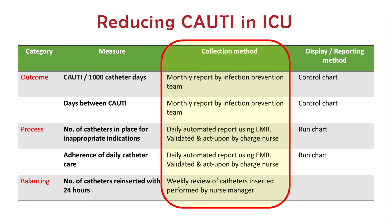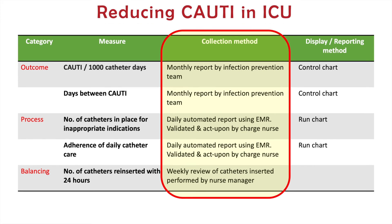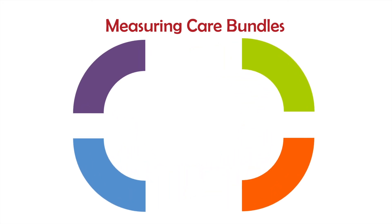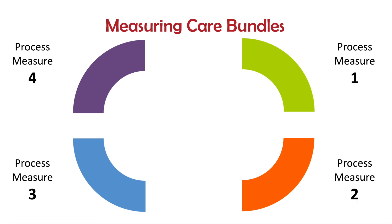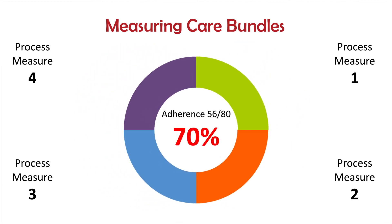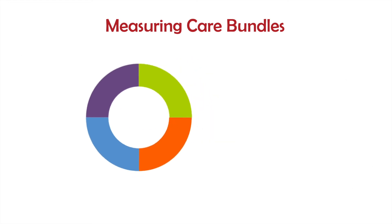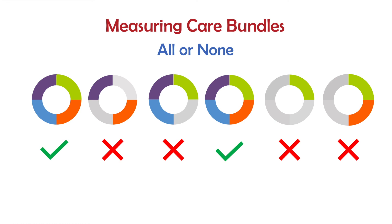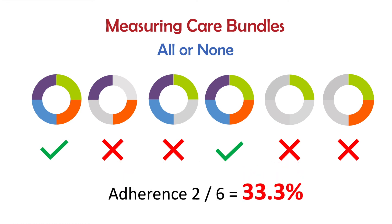In some projects, multiple interventions are needed to work together to improve the outcome. These are often referred to as bundles. All bundle components can be considered individual process measures. Adherence to a bundle can be measured by each component separately, or all components combined together such as percentage of the bundle components completed. Another way is an all-or-none measure — this means that the adherence is only counted when all bundle components are completed.